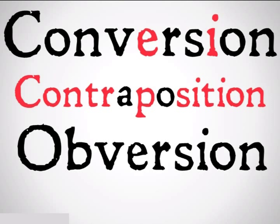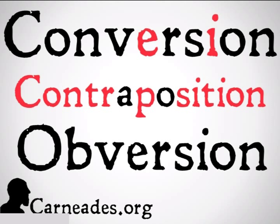That was obversion. Remember, obversion works for all four categorical propositions. Contraposition works for A and O. Conversion works for E and I. I was going to do a series of exercises and problems on these things, but looking at it, it's actually pretty easy. So instead, I'm going to be throwing in a special bonus video on the type-token distinction. Watch this video and more at carnades.org. Stay skeptical, everybody. Thank you very much.